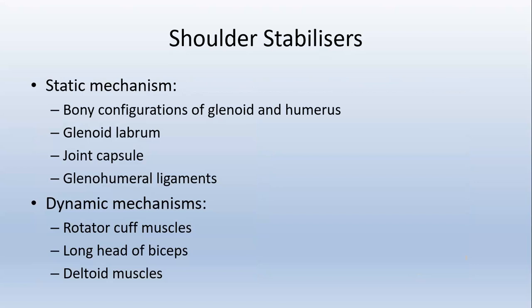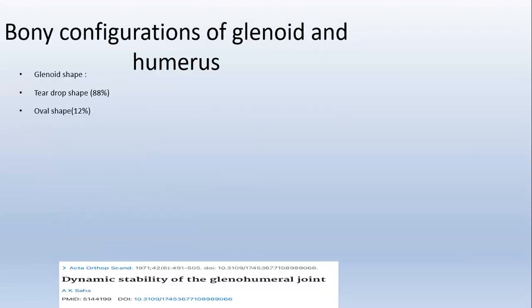The shoulder is stabilized by static and dynamic stabilizers. Static stabilizers include the bony configuration of the glenoid and humerus, glenoid labrum, joint capsule, and glenohumeral ligaments. Dynamic stabilizers include the rotator cuff muscles, the long head of biceps, and the deltoid muscles.